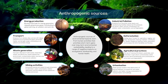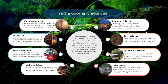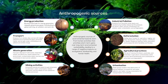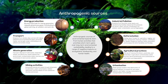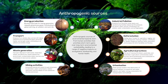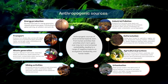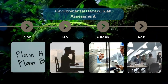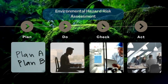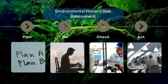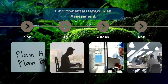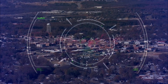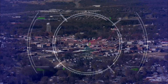Generally, anthropogenic sources of environmental hazards stem from human activities that prioritise short-term gains over long-term environmental sustainability, leading to a range of negative impacts on ecosystems, biodiversity, and human health. Addressing these sources requires a shift towards more sustainable practices and policies that prioritise environmental protection and conservation. Conducting an environmental hazard risk assessment is a multifaceted process that requires a systematic and thorough approach to effectively identify, evaluate, and manage potential risks. Understanding and addressing environmental hazards are crucial for ensuring the sustainability of our planet and the well-being of current and future generations.